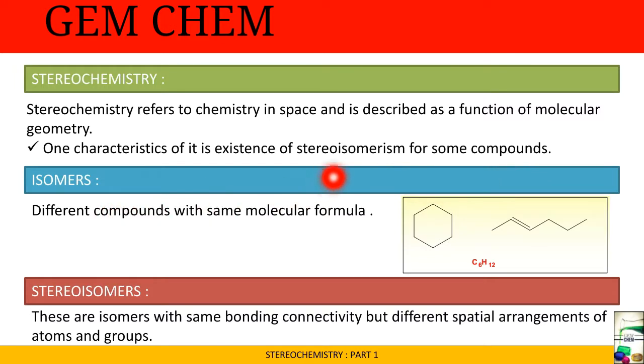Let us concentrate on the term isomer. Isomers are different compounds with same molecular formula. For example, C6H12 has the same molecular formula but the structure can be different. Stereoisomers are isomers with same bonding connectivity but different spatial arrangements of atoms and groups.